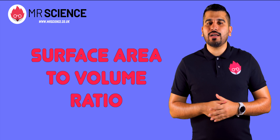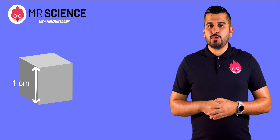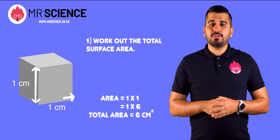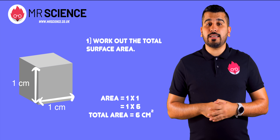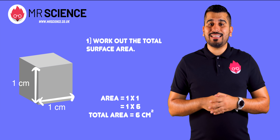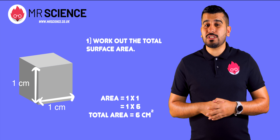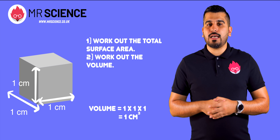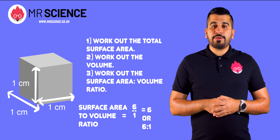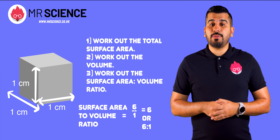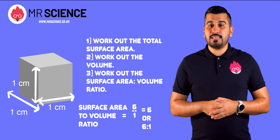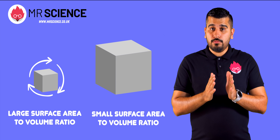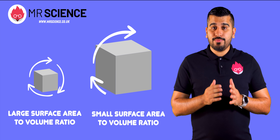Let's go through how you can work out the surface area to volume ratio. If we look at this cube, it has a length of 1 cm. Step 1: work out the total surface area by finding the area of one side, which is 1 times 1, then multiply by 6, as there are 6 sides of the cube. This gives a total surface area of 6 cm squared. Step 2: work out the volume, which is length times width times height, equalling 1 cm cubed. Step 3: divide the surface area by the volume, which gives 6, or as a ratio, 6 to 1. When an organism is small, movement across it is much quicker than when an organism is big.